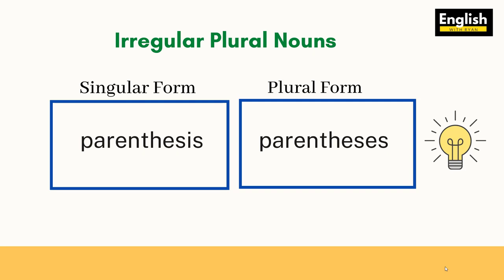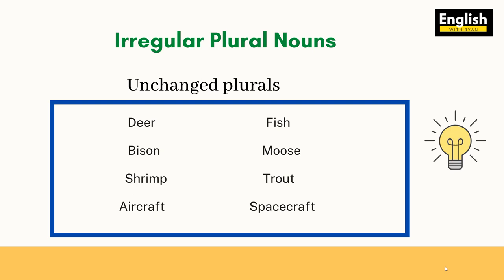Not all plural nouns change — some of them are unchanged, like: deer, bison, shrimp, aircraft, fish, moose, trout, and spacecraft. Even in their plural form, they remain the same. They don't change.